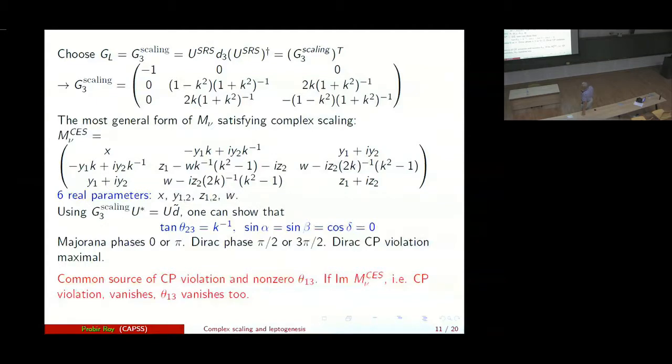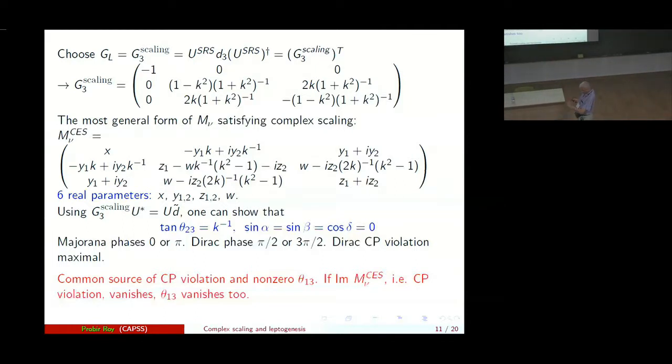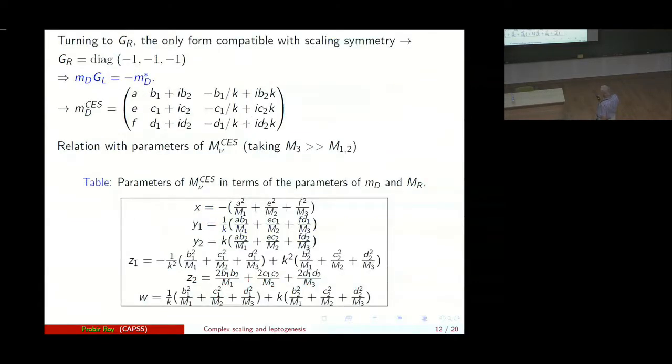Furthermore, there is automatically a common source of CP violation and non-zero theta_13. Both come from the imaginary part of this complex extended form of the neutrino mass matrix. If this imaginary part is 0, CP violation itself vanishes and theta_13 also vanishes. So we have a common origin of theta_13 as well as CP violation. So then we turn to G_R and we find that the only form compatible with scaling symmetry is this form for G_R. And so we are able to reconstruct M_D in terms of these parameters A, B_1, B_2, C_1, C_2 and E, D_1, D_2. And these are related to the 6 parameters of the complex extended form for the neutrino mass matrix by relations given in this table.